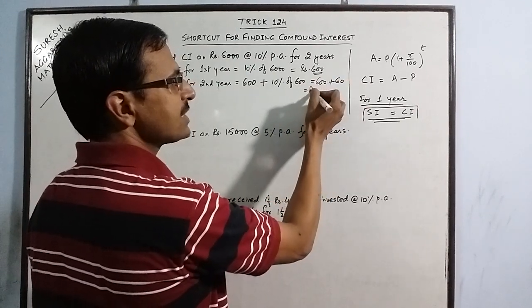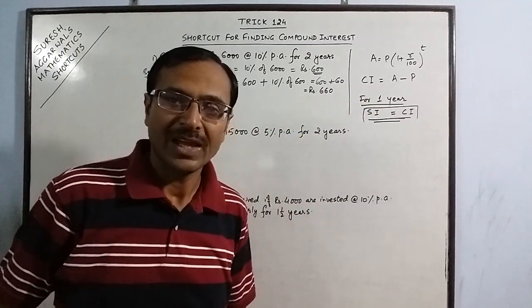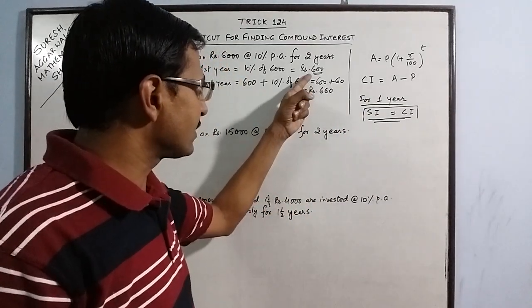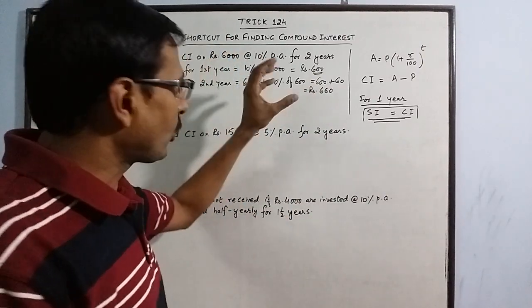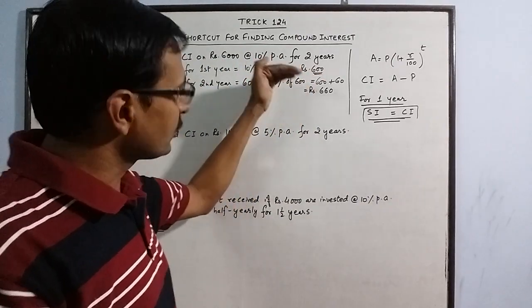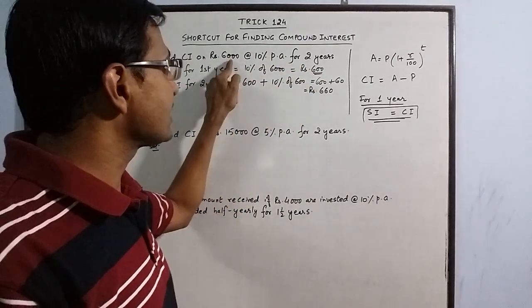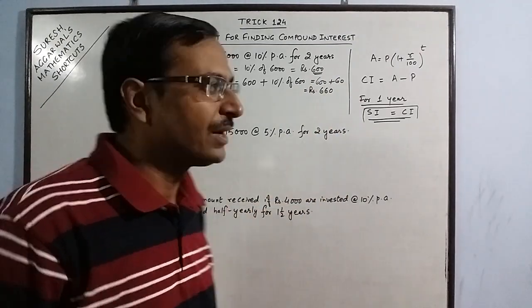Rs. 600 and 60 is the interest for second year, Rs. 660. Notice here that the interest for first year was 600 and for the second year, it is greater because principal amount increased to 6000 plus 600. For the second year, interest is calculated on 6600, so the interest is greater.